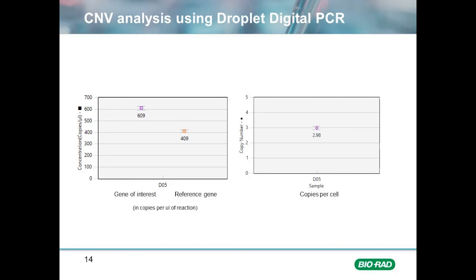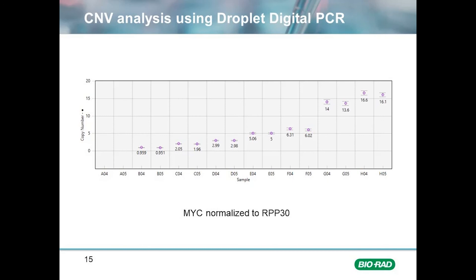The typical output would look something like this. Here we see two graphs: the first depicts the concentration of both our gene of interest and reference gene in copies per microliter of reaction. The second graph shows the number of copies per cell. The error bars represent 95% confidence intervals. This is an example of 8 wells run in duplicate, quantifying MYC and normalized to RPP30. These samples had copy numbers varying from 1 to 16 copies per cell.